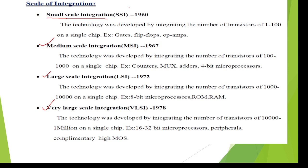For example, on a single chip, if you integrate 1 to 100 transistors, then it is named as small scale integrated circuit technology.